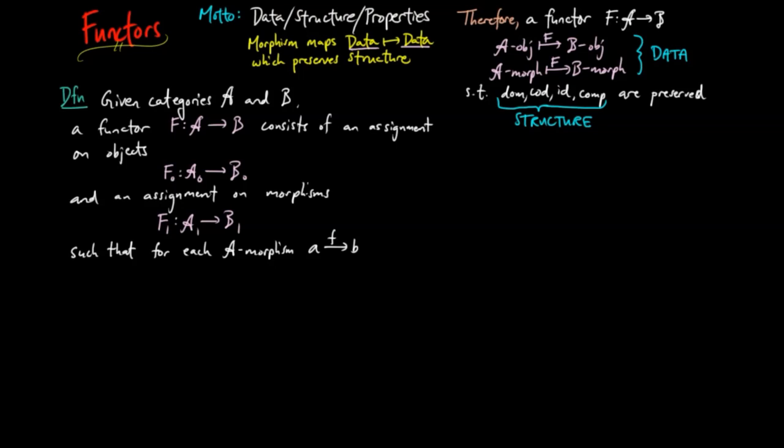the functor F on morphism f has domain F(A) and codomain F(B). In other words, the functor F preserves the domain and codomain. And for each A object A,